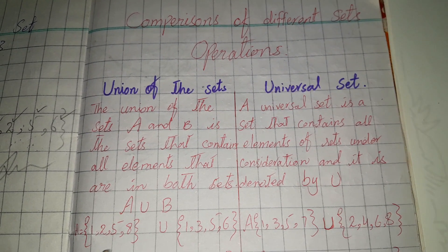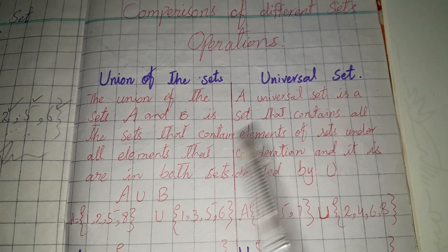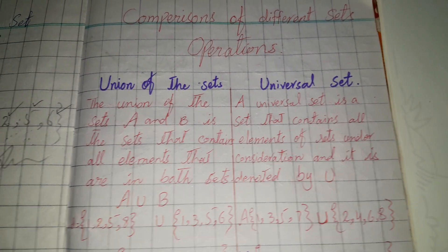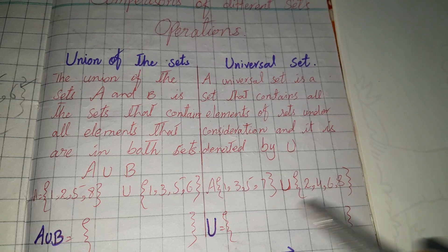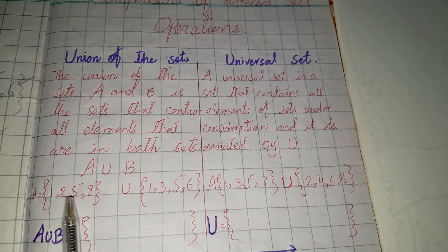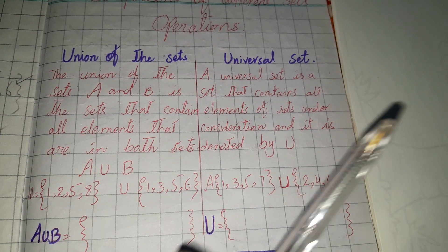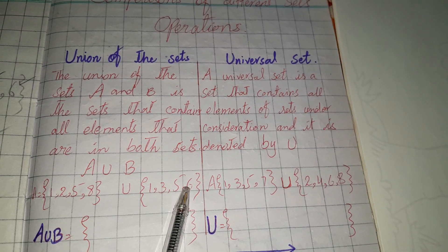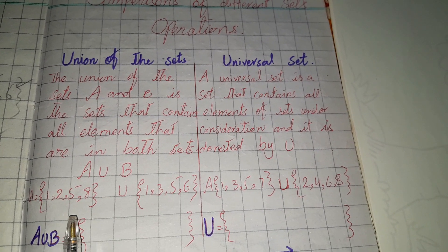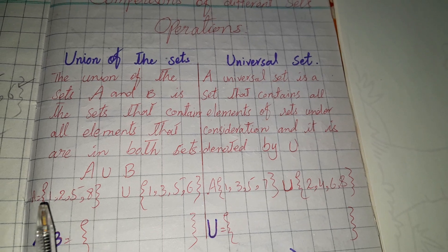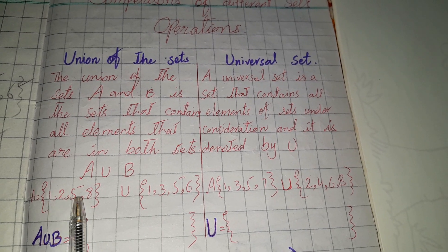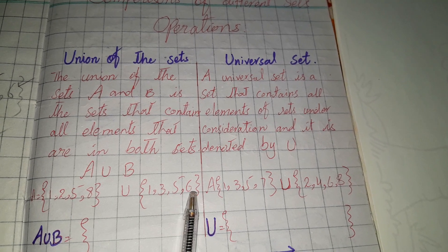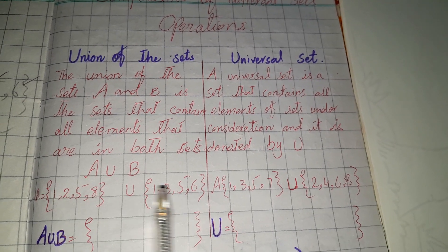Now for the example: here is set A and here is set B. Set A contains the elements 1, 2, 5, and 8. Set B contains the elements 1, 3, 5, and 6. We will use these two sets to compare union and universal set operations.